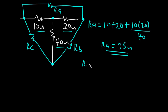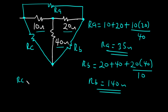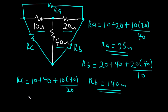For Rb, it is 20 plus 40 plus (20 times 40) divided by 10, so Rb is going to be 140 ohms. For Rc, it is going to be 10 plus 40 plus (10 times 40) divided by 20, so Rc is going to be 70 ohms.